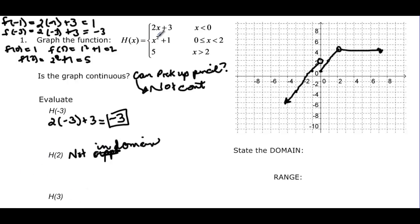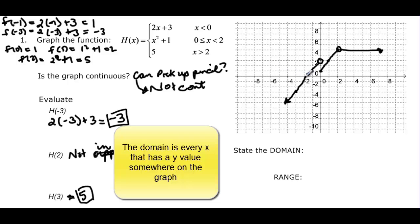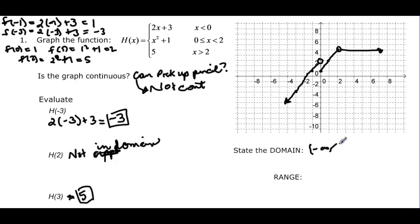H of 3 goes into the piece where x is greater than 2, and that just equals 5. Now for domain and range: the domain goes from negative infinity because the first piece goes left forever. It includes all points — 0 is included — all the way across, except for x equals 2, which had no y-value. So the domain is negative infinity to 2 (not including 2), union 2 to infinity.